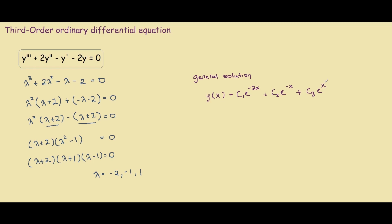So to get the general solution, what you do is select three arbitrary constants because we have three values for lambda. And for each lambda value, you choose e and put the coefficient in front of x. And this will be your answer.